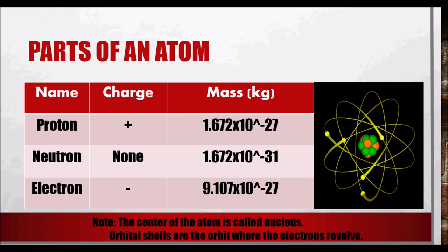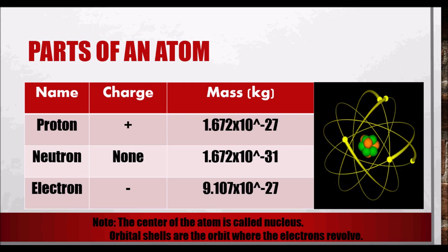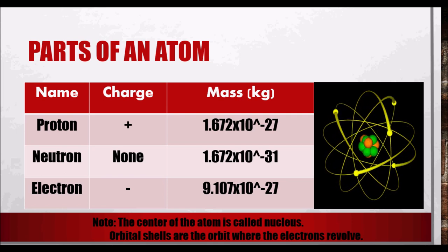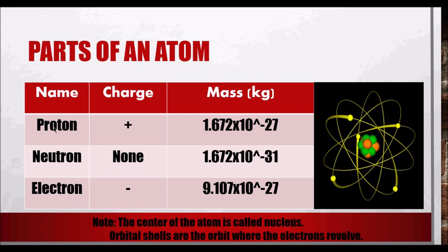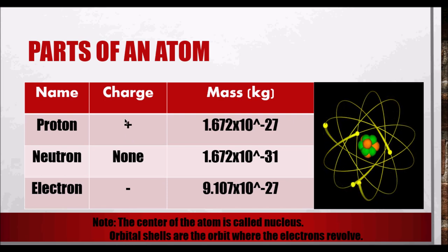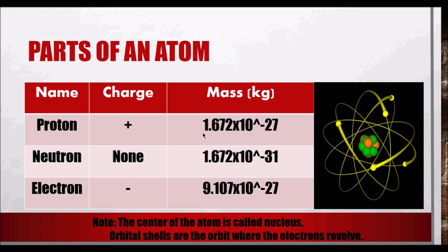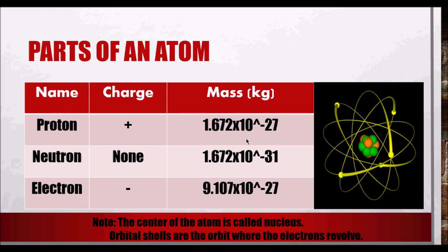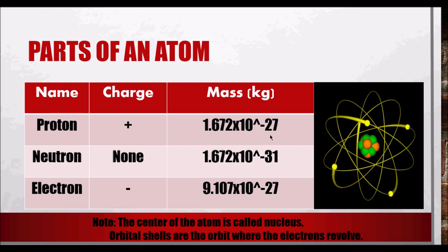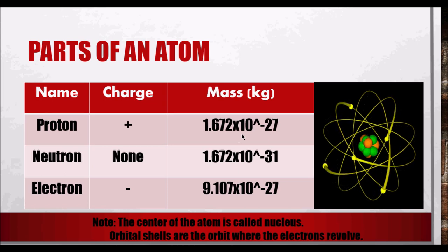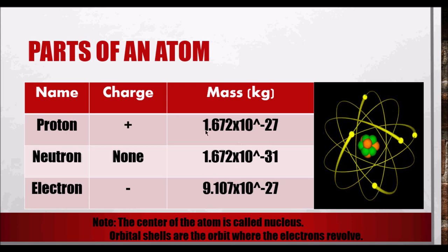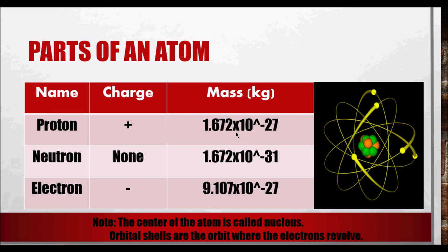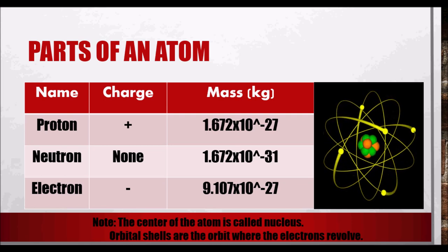There are three parts of an atom: proton, neutron, and electron. The proton is positively charged, and its weight is 1.672 times 10 to the negative 27 kg. The approach here is engineering level, but when we quantify this, it's extremely light on the atomic scale.